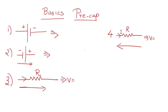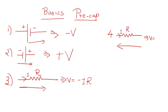Before going through it, let us do a recap about basics of networks, which will help us solve problems in mesh analysis. When moving from the positive to the negative terminal of a voltage, it is minus V. When moving from negative towards positive, it is plus V. When moving in the same direction of current through a resistor, it is minus I×R, and when moving in the opposite direction, it is plus I×R. These are the basic concepts of networks.